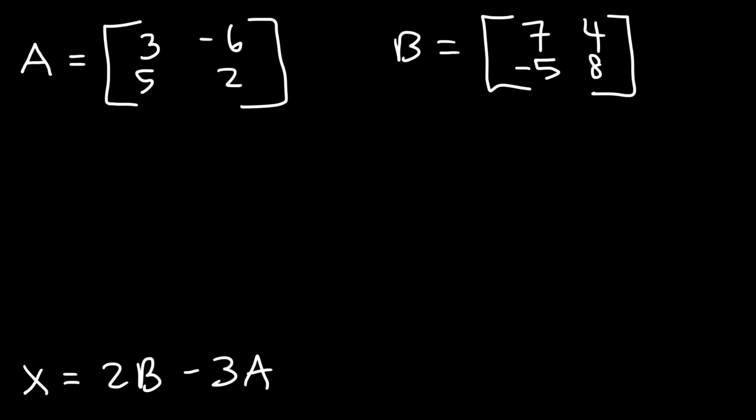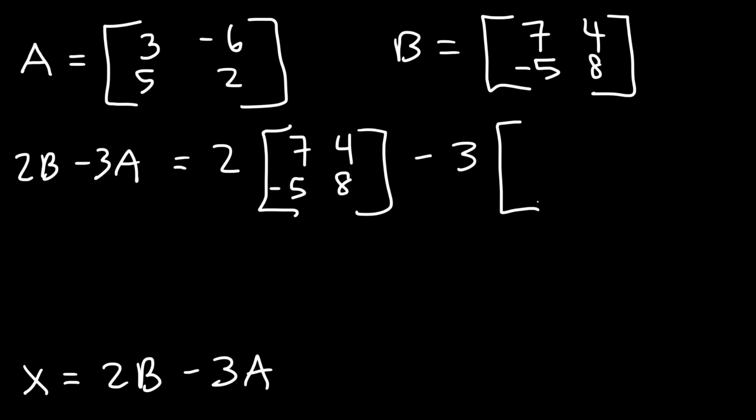So what is the value of 2B, I mean 2B rather, minus 3A? So we need to multiply matrix B by 2, and then subtract it by 3 times the value of matrix A.